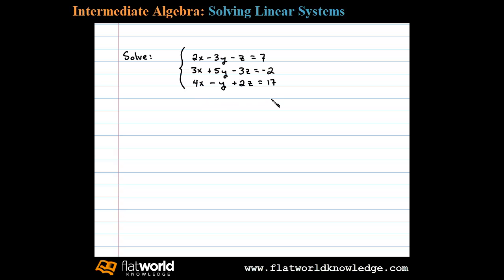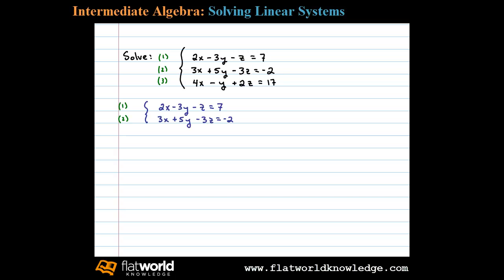Here we're asked to solve a linear system that consists of three variables and three equations. Let's begin by labeling these equations 1, 2, and 3. We can eliminate z using equations 1 and 2.